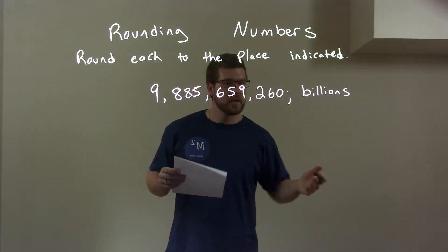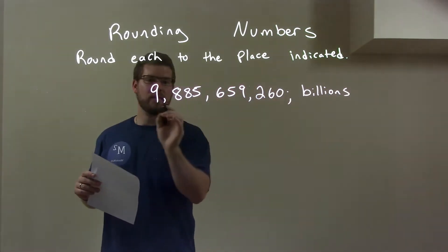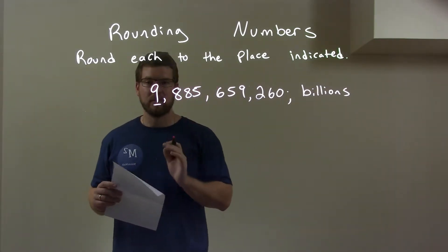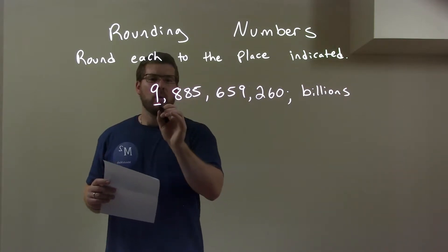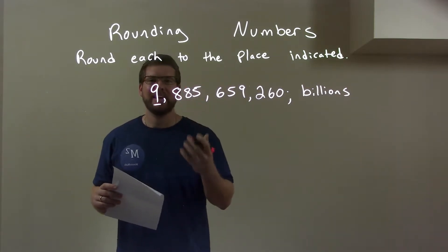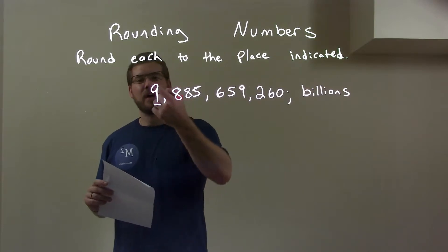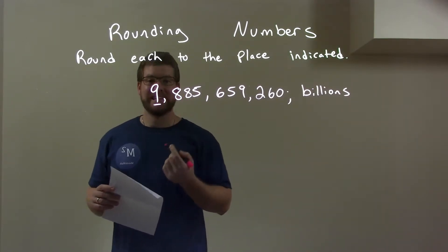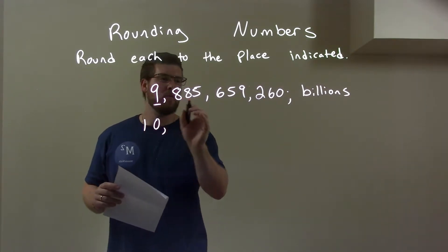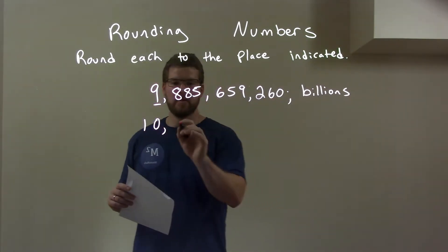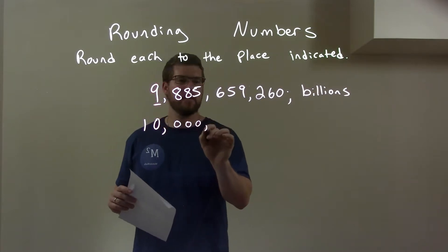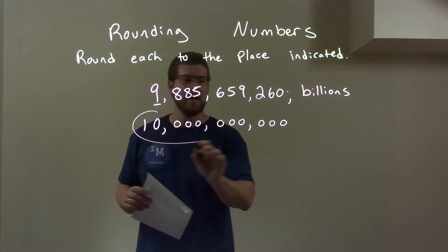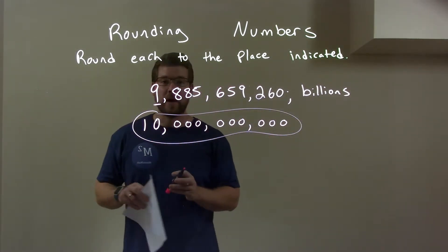The billions place is right here on that 9. We look to the right — that 8 is between 5 and 9, causing this side to round up. Since we're rounding up, 1 up from 9 is a 10. So we actually have a 10 here, and the rest of these numbers become 0. So our final answer is 10 billion.